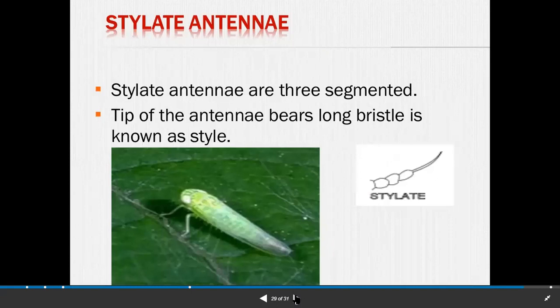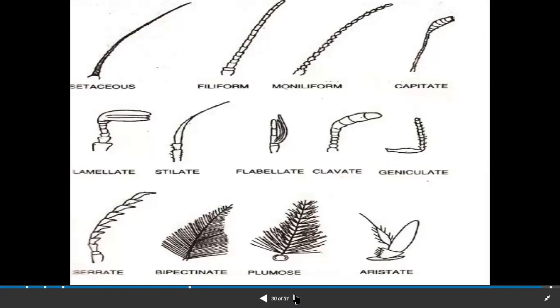Next is stylate antenna. Stylate antenna have three segments; the tip of the antenna bears a long style. Finally, an overview of the antenna types: setaceous, filiform, moniliform, capitate, lamellate, serrate, flabellate, clavate, geniculate, serrate, bipectinate, plumose, and aristate. You have to learn one example with the order of the insect for each type.